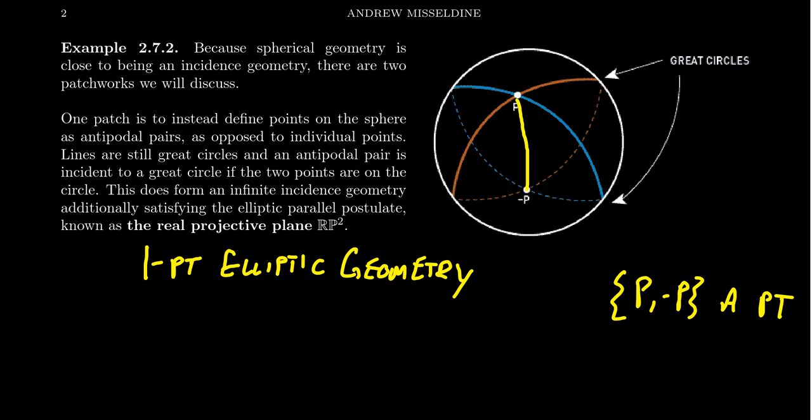Line determination is fixed because the only violation to line determination on the sphere was caused by antipodes. If antipodes are now considered the same point, then there are no longer repeated intersections. These different lines are actually no longer in violation of line determination. So basically, what we're doing with the real projective plane is we take the sphere and we glue opposite sides of the sphere together.